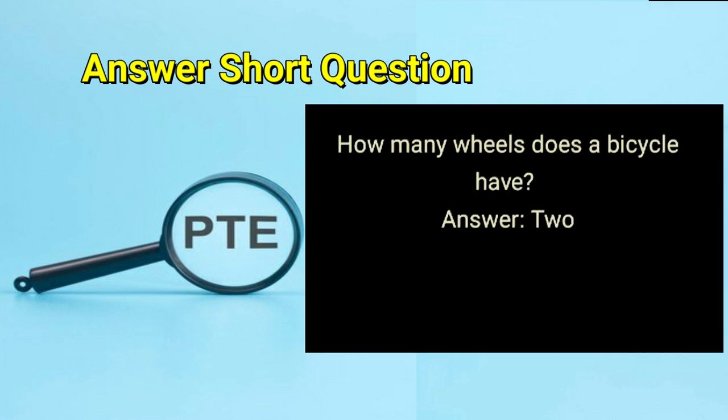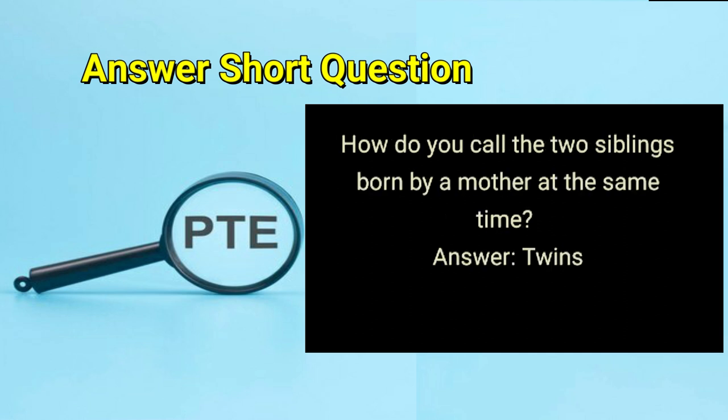How many wheels does a bicycle have? Answer: two. How do you call the siblings born by your mother at the same time? Answer: twins.